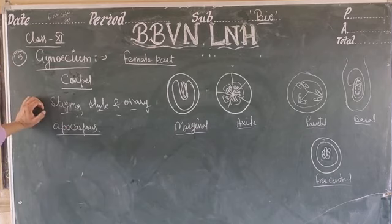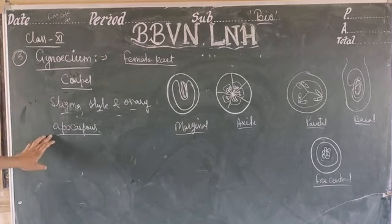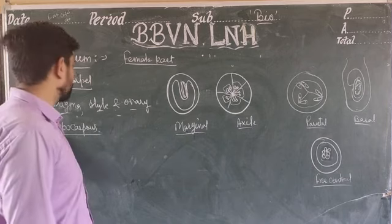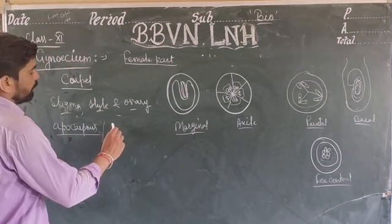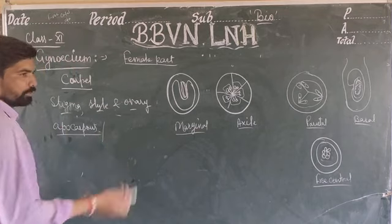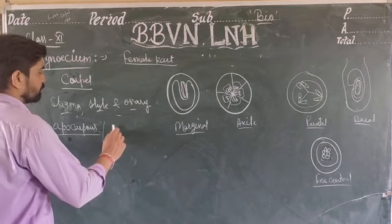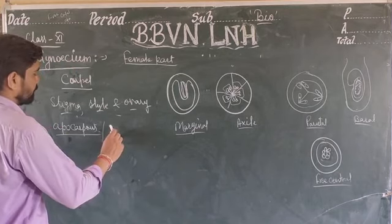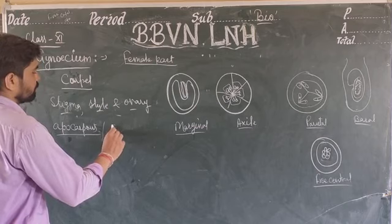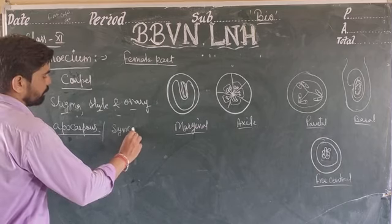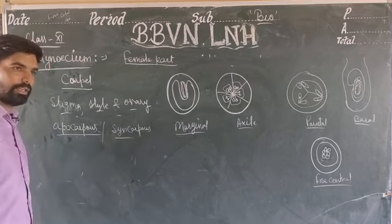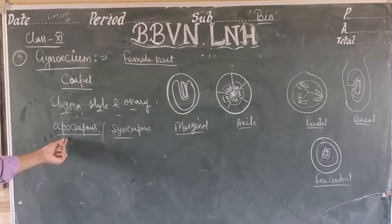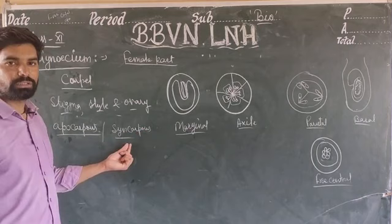If the carpels remain free and are not fused with each other, the gynoecium or ovary is known as apocarpous. If the carpels are fused with each other, it is known as syncarpous. So: free carpels = apocarpous; fused carpels = syncarpous.